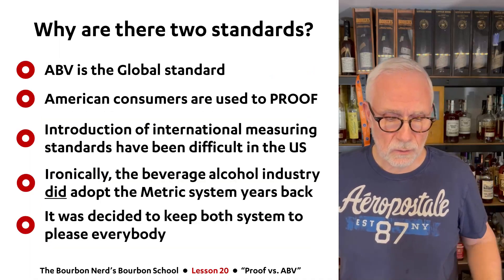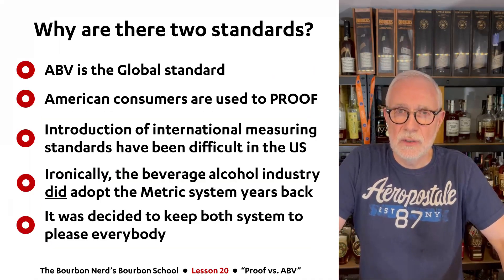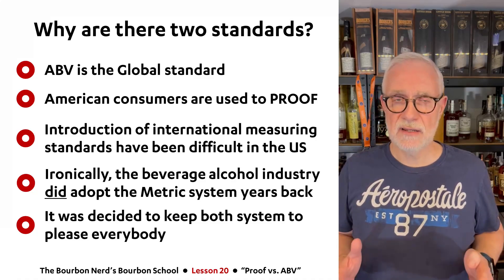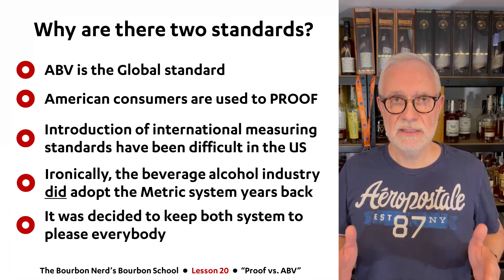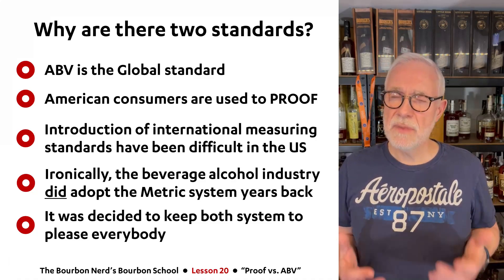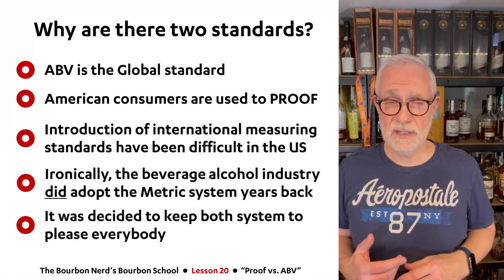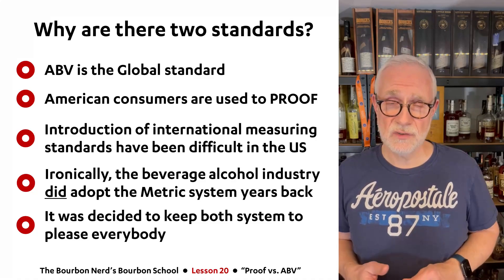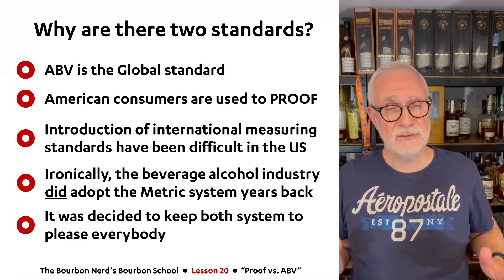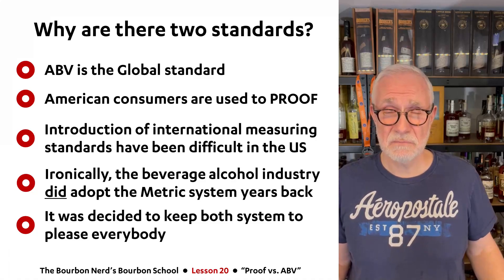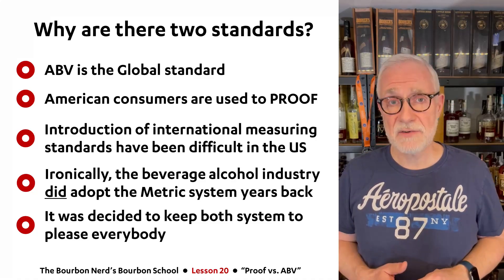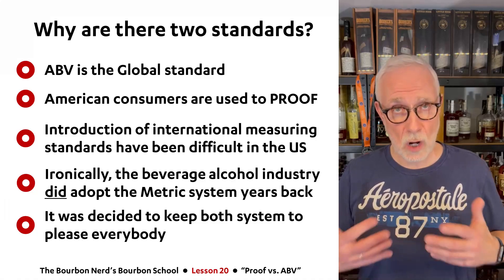So why are there two standards? ABV — alcohol by volume — is the global standard, used in almost every country in the entire world. But American consumers, since hundreds of years ago, are more used to and familiar with the proof level. It's been used literally since the late 1600s and early 1700s. Introducing international measurement standards in the US has been very, very difficult. The US is one of about four or five countries in the entire world that doesn't use the metric system, even though the metric system is part of US law — it's just optional for states to implement.